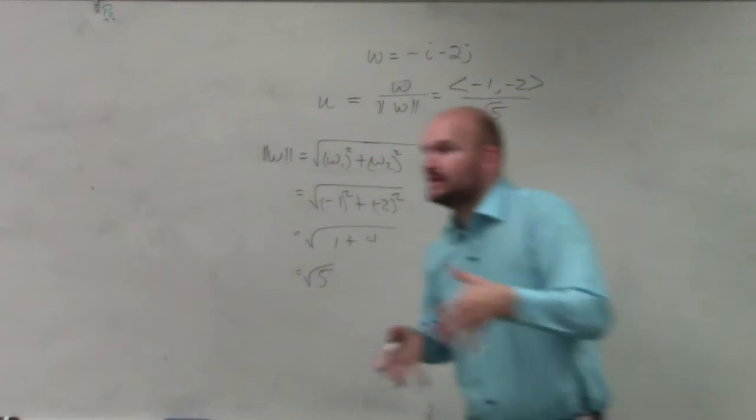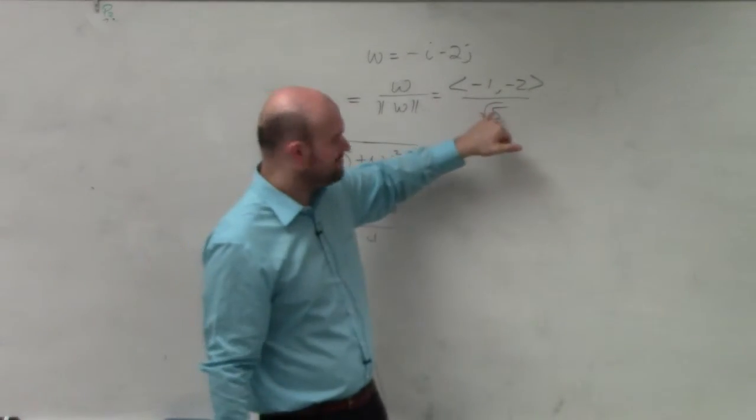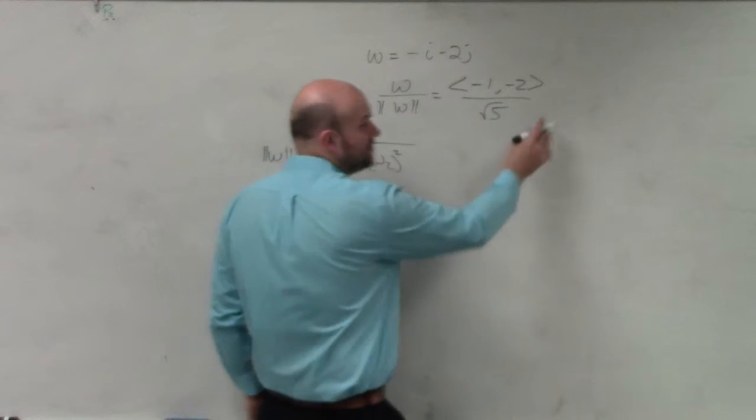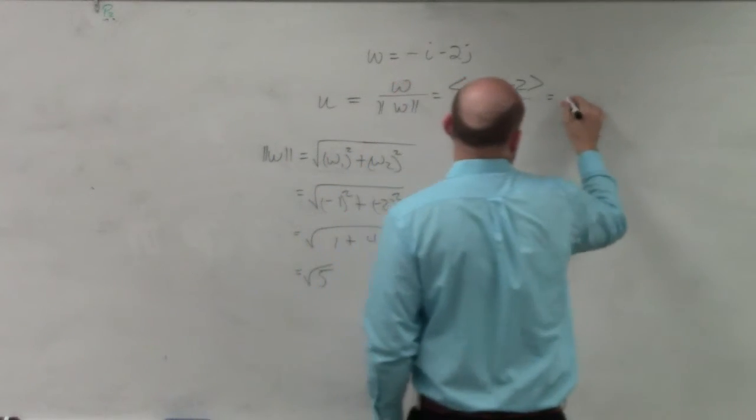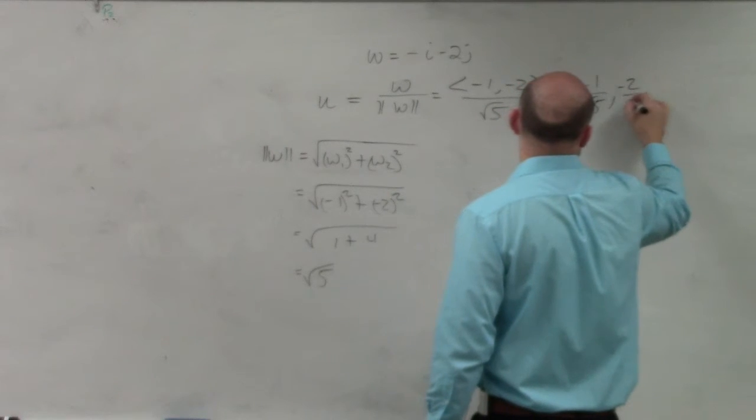Square root of 5. Now, last class period, I showed you how you could rewrite that as a multiplication of a fraction. I'm just going to show you here, guys. This basically can divide into both of those. So therefore, my final answer would be negative 1 over the square root of 5, comma, negative 2 over the square root of 5.